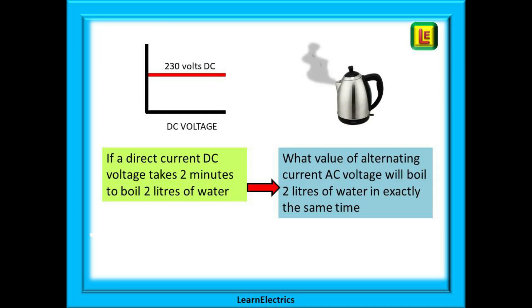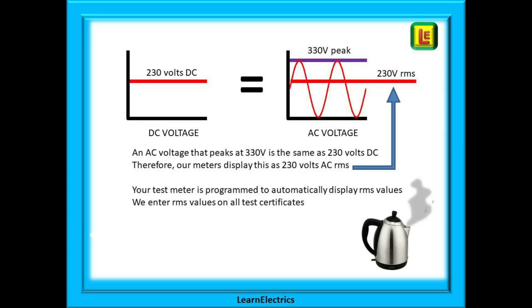If a direct current or DC voltage takes two minutes to boil two liters of water, then what value of alternating current or AC voltage will boil the same two liters of water in exactly the same time? If we start with a 230 volt DC direct current, this voltage is constant. Because it is DC, it never changes. It is always 230 volts.